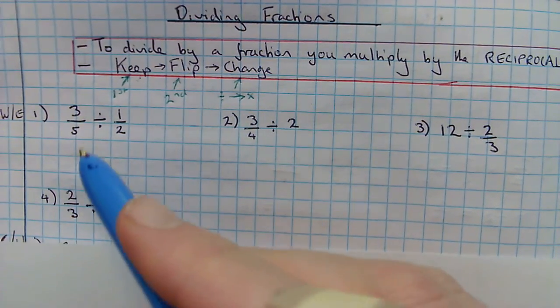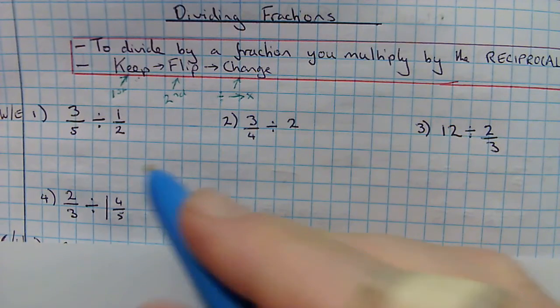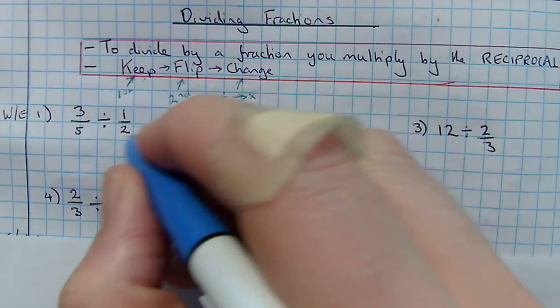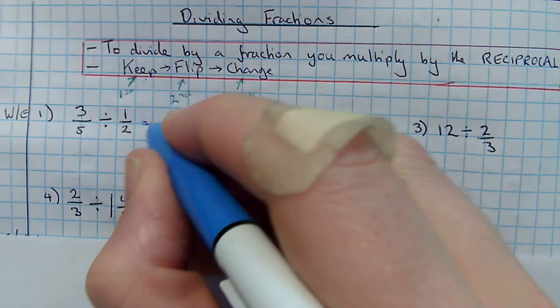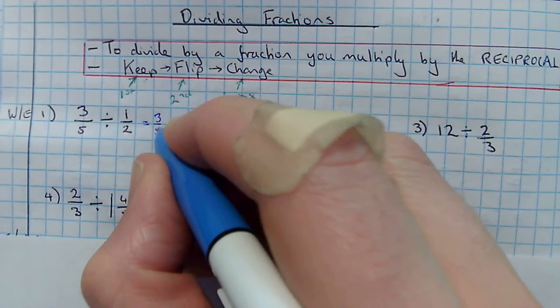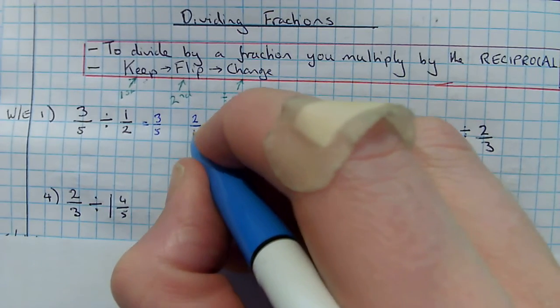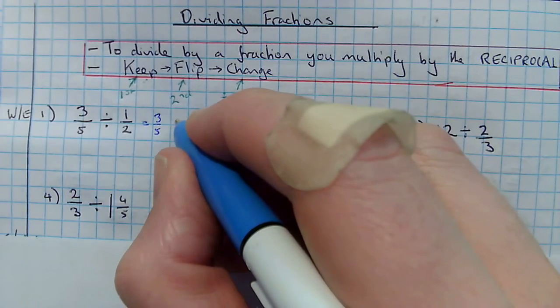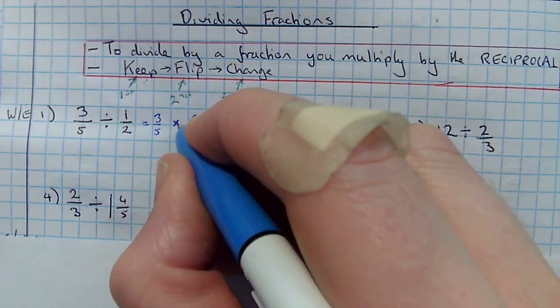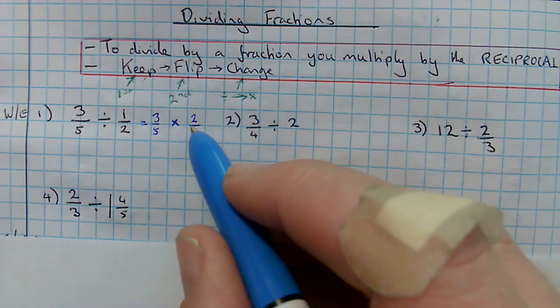So for this first one, my first example, I keep my first fraction, which is going to be 3 fifths. I flip my second fraction, becomes 2 over 1. And I change my divide to a times. And then we go exactly as we did in the previous lesson.